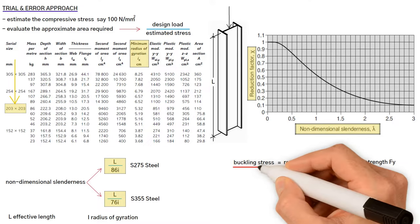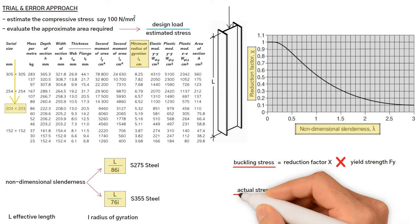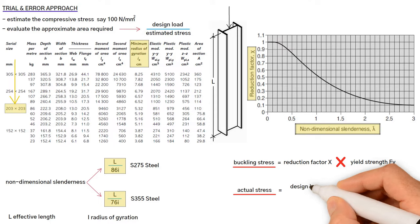Finally, we compare the buckling stress with the actual stress on the column. So, actual stress equals design load divided by actual area. The actual stress should be less than or equal to the buckling stress obtained from the design curve.